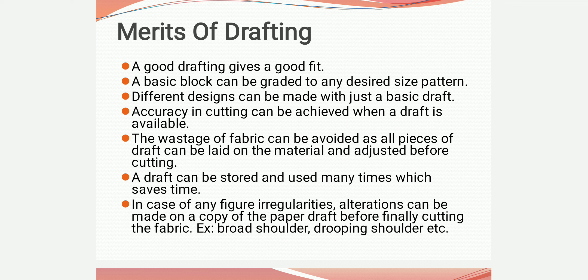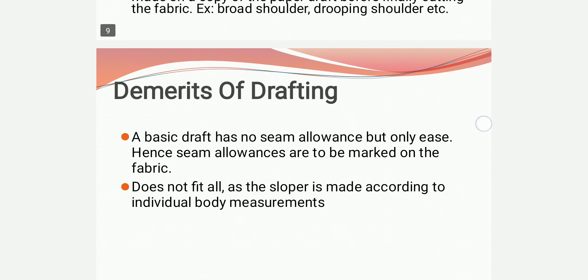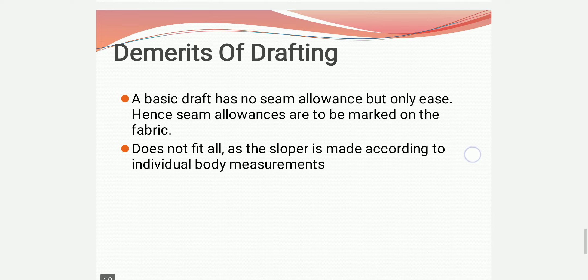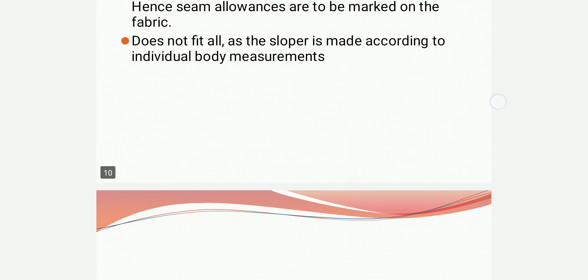Examples of figure irregularities include broad shoulders, drooping shoulders, etc. Demerits of drafting: A basic draft has no seam allowance but only ease; hence seam allowances must be marked on the fabric separately. It does not fit all, as the sloper is made according to individual body measurements.